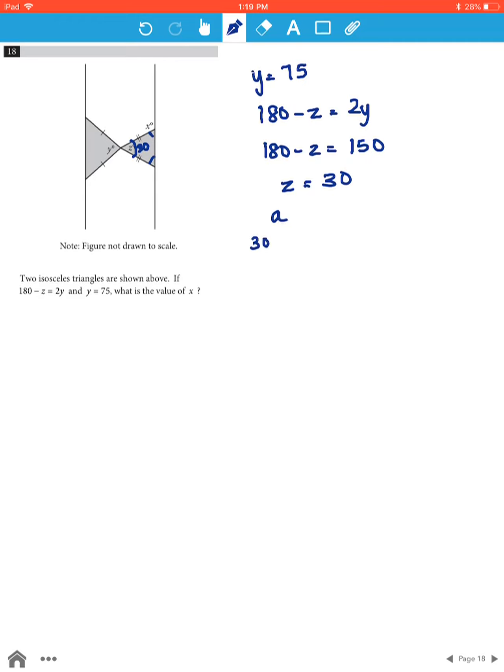Therefore, 30 plus 2a will be equal to 180. So 2a will be equal to 150, and a will be equal to 75.